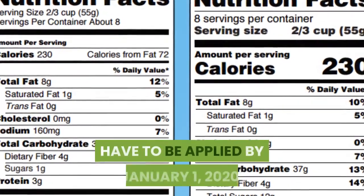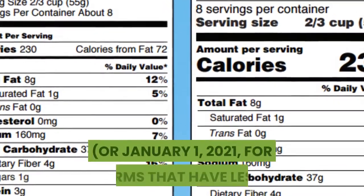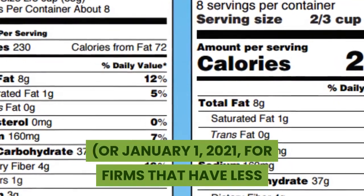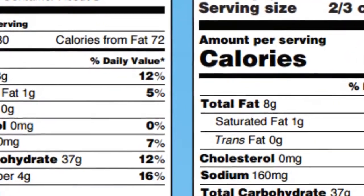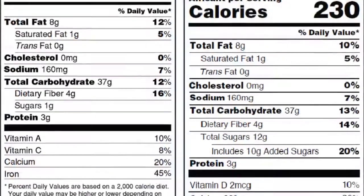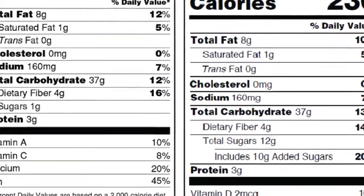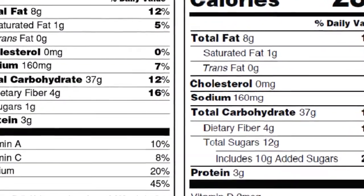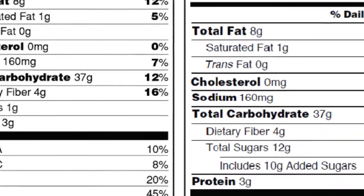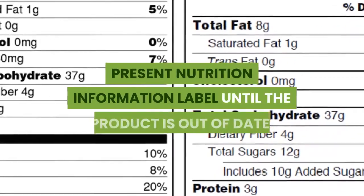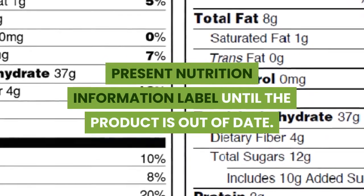The updated nutrition facts label requirements must be applied by January 1st, 2020, or January 1st, 2021 for firms with less than $10 million in annual sales. There will be some leniency early on, as products packaged on or before December 31st, 2019 will be permitted to retain the current nutrition information label until the product is out of date.